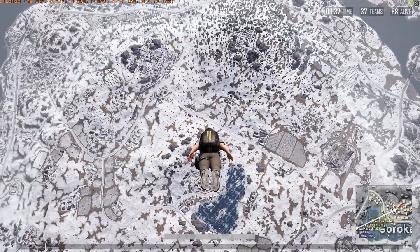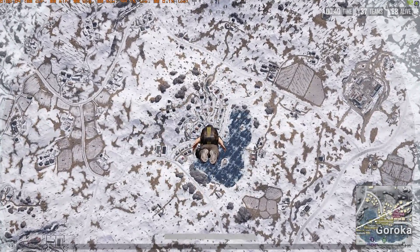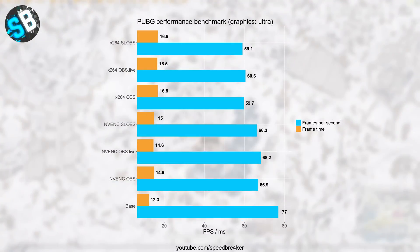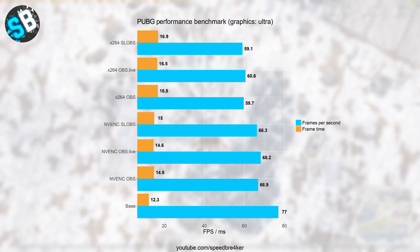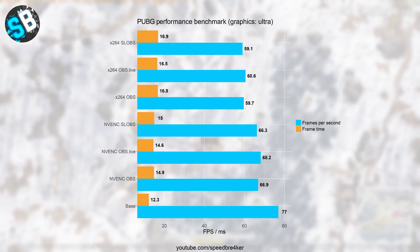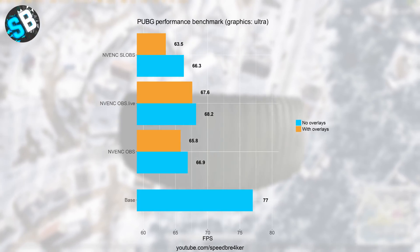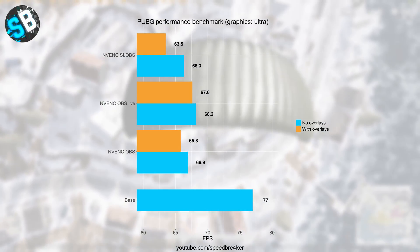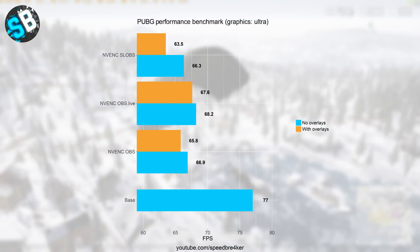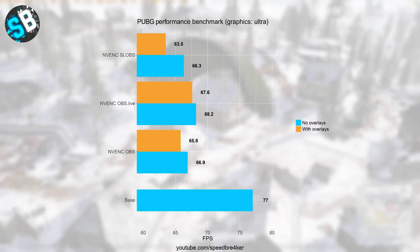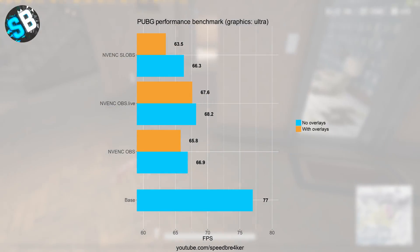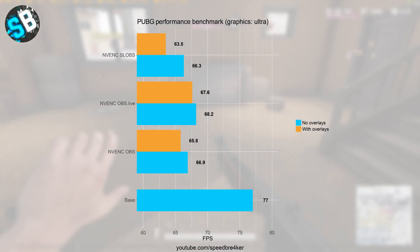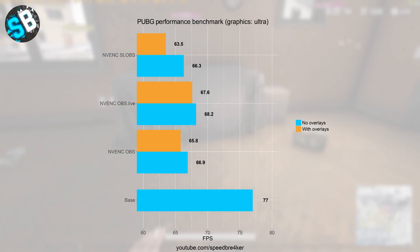Finally, moving on to PUBG, which is a much more GPU-intensive game than CSGO though not as GPU-intensive as Fortnite. We can see a clear difference between streaming using x264 and NVENC. OBS Live produces the highest in-game performance over the other two options. And when looking at results with overlays enabled, OBS Live once again comes out as the clear winner — in fact OBS Live with overlays enabled even outperforms Streamlabs OBS without any overlays. So if you're playing PUBG and using Streamlabs OBS, switching to OBS Live might make your life a little bit better.